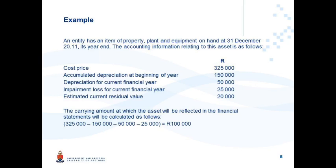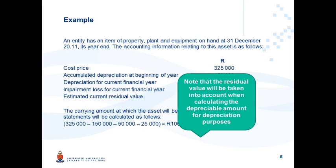How would you calculate the carrying amount as the subsequent measurement of this asset? It would be the cost of 325 less the accumulated depreciation at the beginning of the year, less 50,000 current year depreciation, and current year impairment loss — so the carrying amount of this asset would be 100,000. Note that the residual value is taken into account when calculating the depreciable amount for depreciation purposes, but it is not considered when calculating the carrying amount.